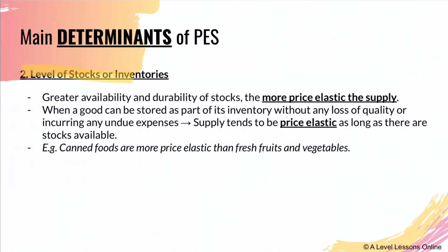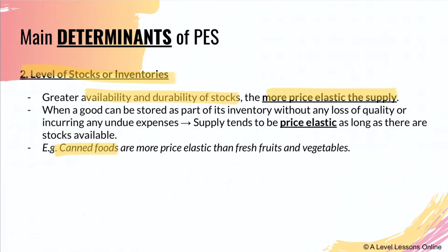The second determinant is the level of stocks or inventories — how much inventory a firm currently holds. Greater availability and durability of stocks makes supply more price elastic, because firms can respond quickly to a sudden increase in demand. When a good can be stored without loss of quality or undue expense, supply is more price elastic. For example, canned foods are more price elastic than fruits and vegetables, as they can be stored for long periods.